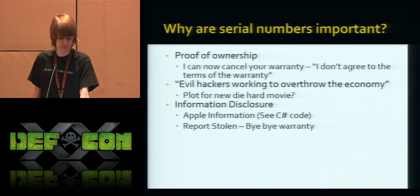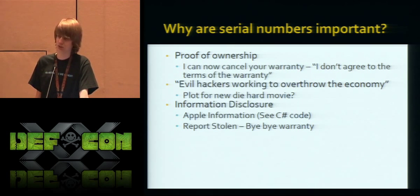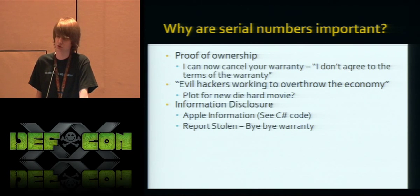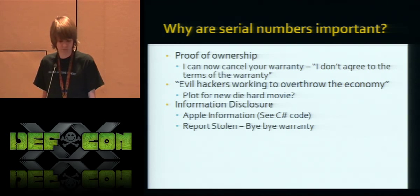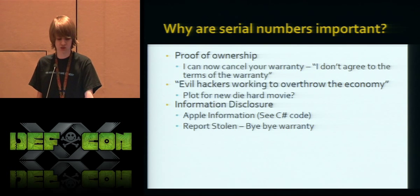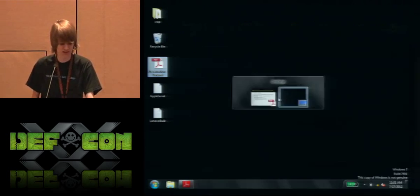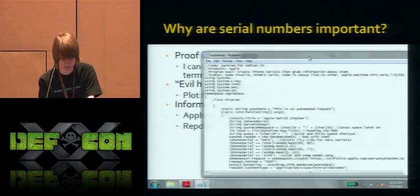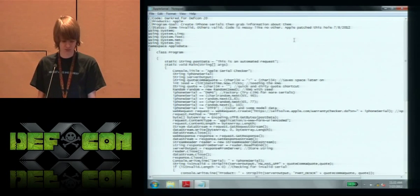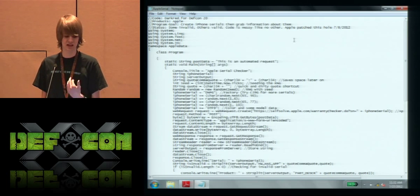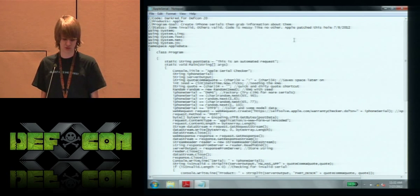Why are serial numbers important? Proof of ownership. You can cancel a warranty by saying you do not agree to the terms and conditions in that six-page paragraph. There's the Die Hard movie plot where evil hackers invalidate everyone's warranty to collapse the economy. You can do information disclosure — you can disclose quite a bit of information with just an Apple cell phone serial. I've got some C# code for that. You can report it stolen. The code generates an iPhone serial and automatically queries a hole Apple left on their website, returning data like ICC ID, IMEI, personalization, date of purchase, carrier, and warranty coverage.